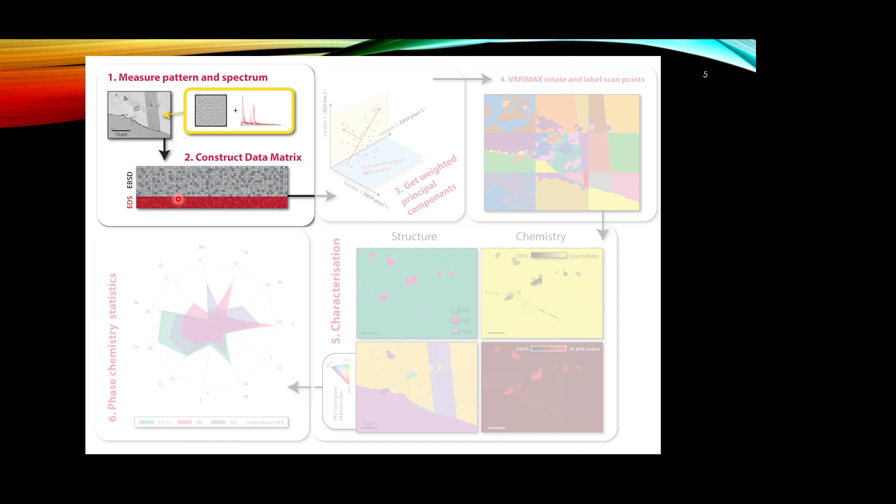We then use a method developed by Angus Wilkinson and colleagues, the VariMax Rotation, to enable us to create similar variance physical data for each point. This enables us to label the scan points with each of those rotated components. Once we've done that, we can choose how we classify those components, often through EBSD based pattern matching. Once we've classified them to different phases, we can look at the chemical variation of those components, the classified structure or phases, and extract out the chemical crystallographic orientations.